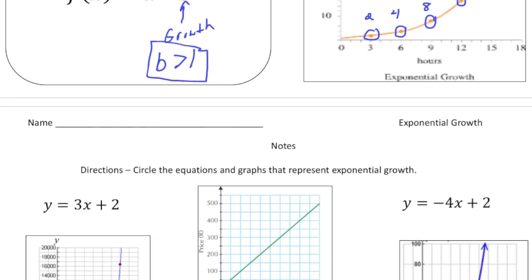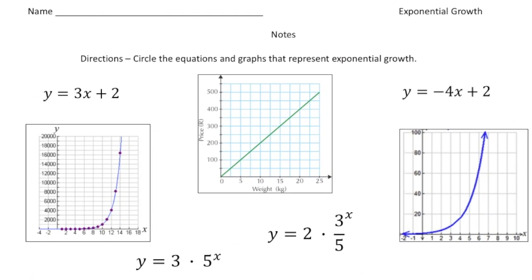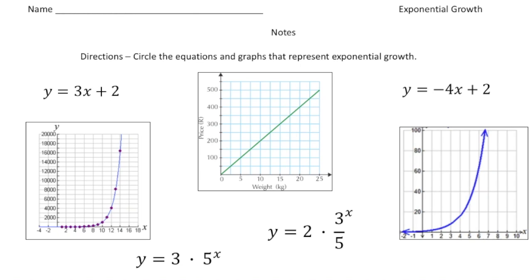So let's take a look at the next one. We have a series of functions. We want to know which one of these show exponential growth. So the first one, we have y equals three x plus two, and that's linear. So definitely not this one.